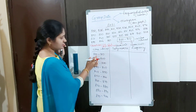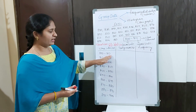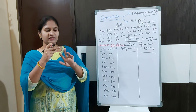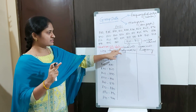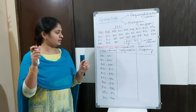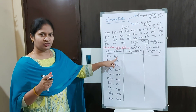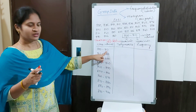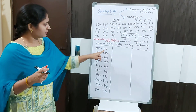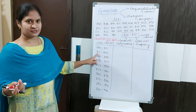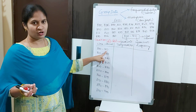The class interval they asked us to take is 800 to 810. Now, a doubt: if I count from 800 — 801, 802, 803, 804, 805, 806, 807, 808, 809 — the limit is 10. The class size is 10. If I include 810, the class size becomes 11. So we include 800 to 809 only; we should not include 810 here. The upper limit of a class interval is not included — it becomes the lower limit of the next class interval. The lower limit is always included; the upper limit is not.